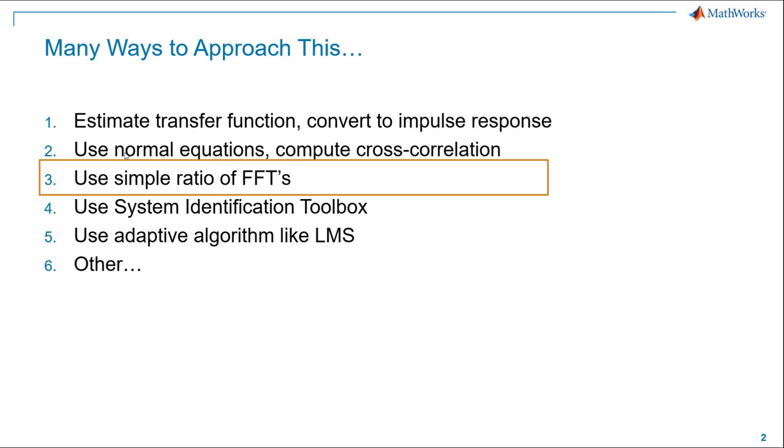Our second video showed a simplification of the normal equations, where we computed the cross-correlation between the output and the input, and we called that a poor man's estimate of the impulse response. As we saw, that works well when you've got white noise input, but it doesn't work so well when you've got something that's not white noise, like a PAM3 signal. Your impulse response estimate suffers quite a bit.